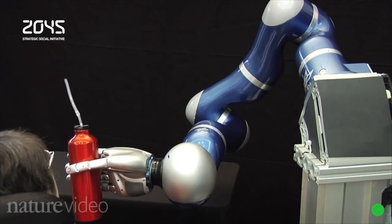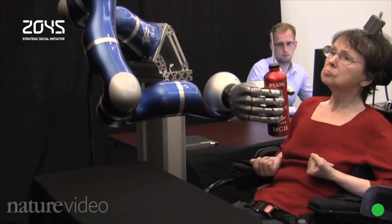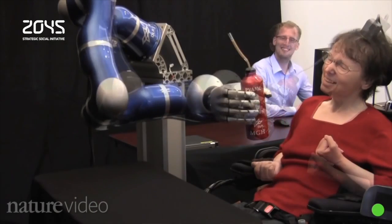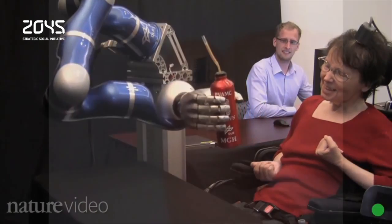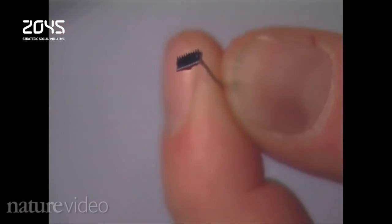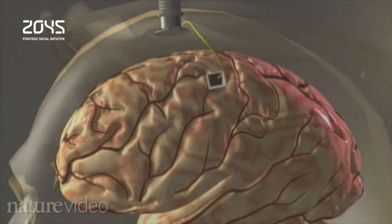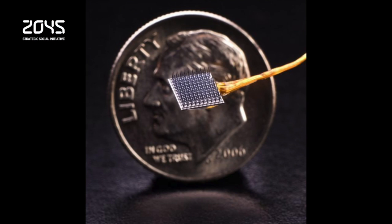One participant was even able to type at a rate of 6 words per minute using software originally developed to help people type with eye movement. This study's anonymous subjects, referred to as T6 and T7, both suffer from ALS. A year before these tests began, they each had a 4 mm square neural recording device surgically implanted in the part of the brain that controls hand function.